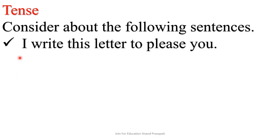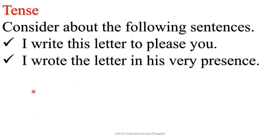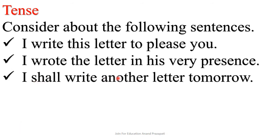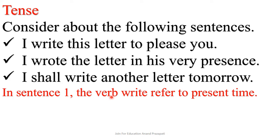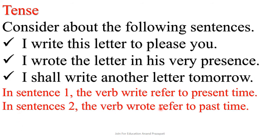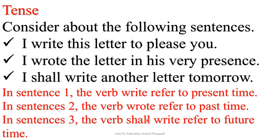Consider the following sentences. 'I write this letter to please you.' 'I wrote the letter in his very presence.' 'I shall write another letter tomorrow.' Let us discuss the verb of these three sentences. In sentence 1, the verb 'write' refers to present time. In sentence 2, the verb 'wrote' refers to past time. In sentence 3, the verb 'shall write' refers to future time. As per this, we have three types of tense.